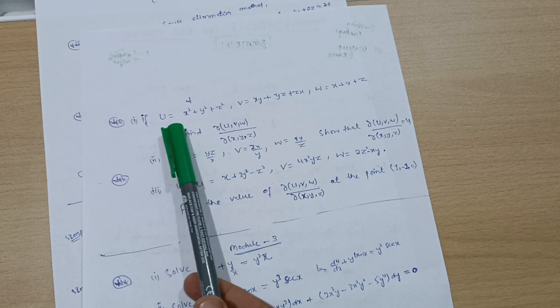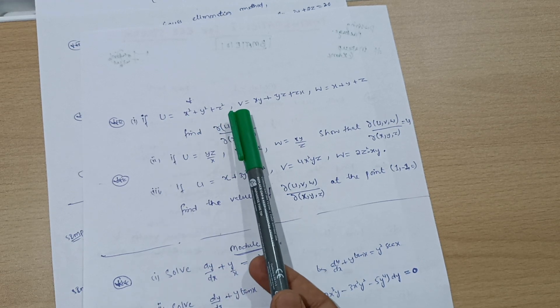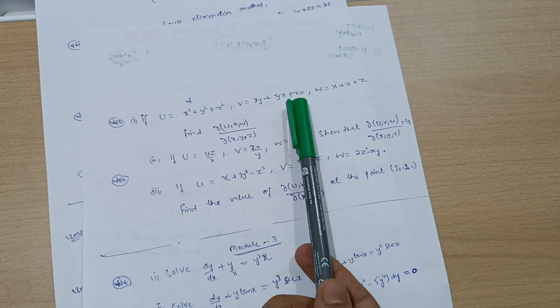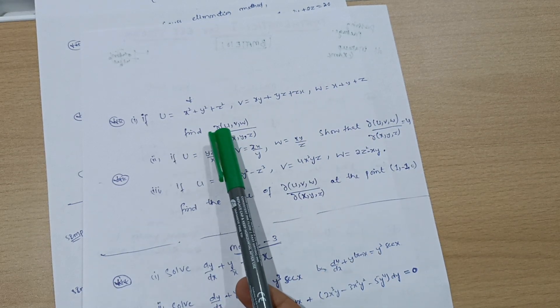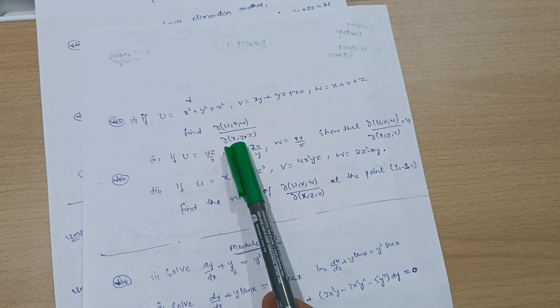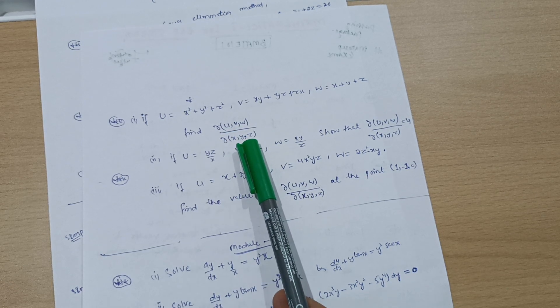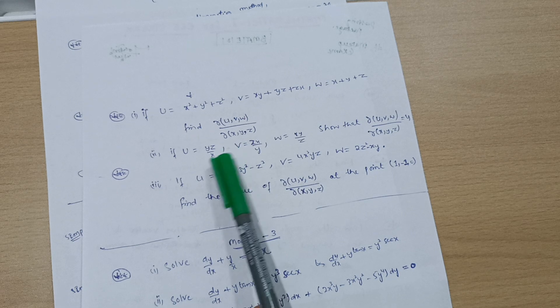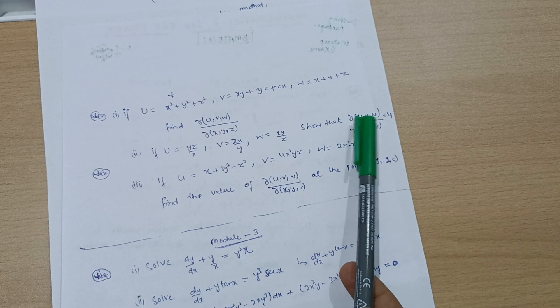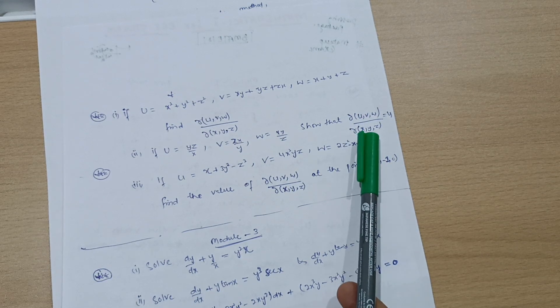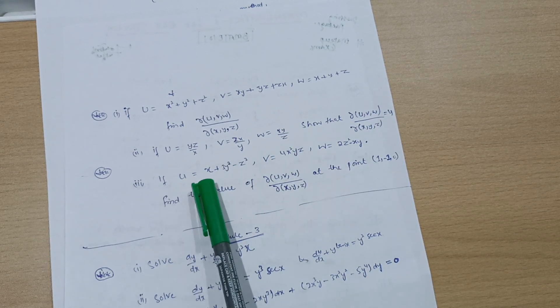Next, if u equals x squared plus y squared plus z squared, v equals xy plus yz plus zx, w equals x plus y plus z, find dow of uvw divided by dow of xyz. If u equals yz by x, v equals zx by y, w equals xy by z, show that dow of uvw divided by dow of xyz equals u.